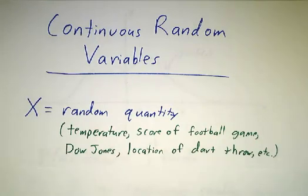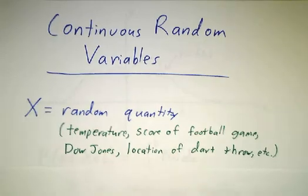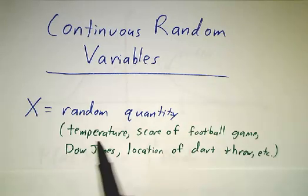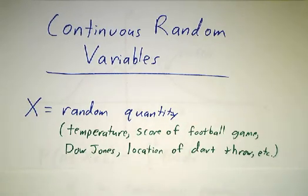So a random variable is some quantity that you don't know. It's something that depends on chance, like the temperature tomorrow, or the score of next week's football game, or what the Dow Jones average is going to be three months from now, or where a dart that I throw at the board lands. Lots and lots of things in the real world that depend on chance.